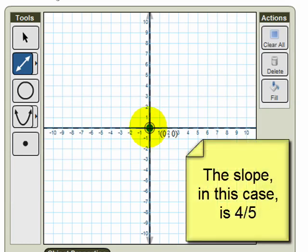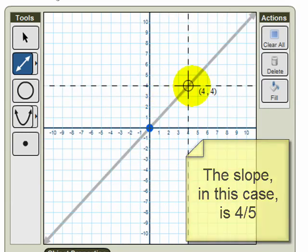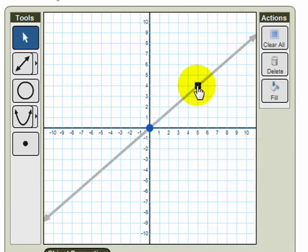Then I can use my slope by carefully counting up 4 units and over 5 units to plot a second point on the graph. When I click outside of this line, you'll see that the line becomes a solid black line and is then ready for grading.